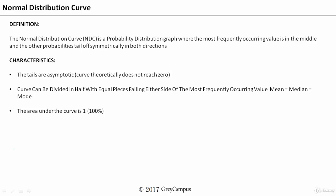If you really see what is the normal distribution — say, for example, assume that in an auditorium, there are about 100 adult Indian males assembled. We want to predict what is going to be the range in height of all these 100 people.